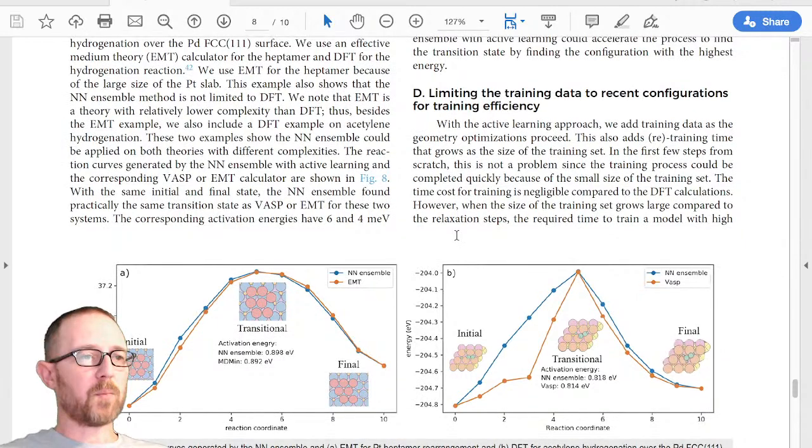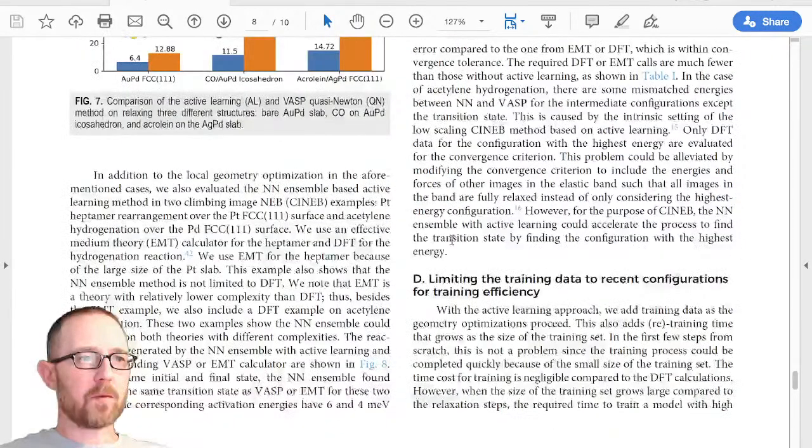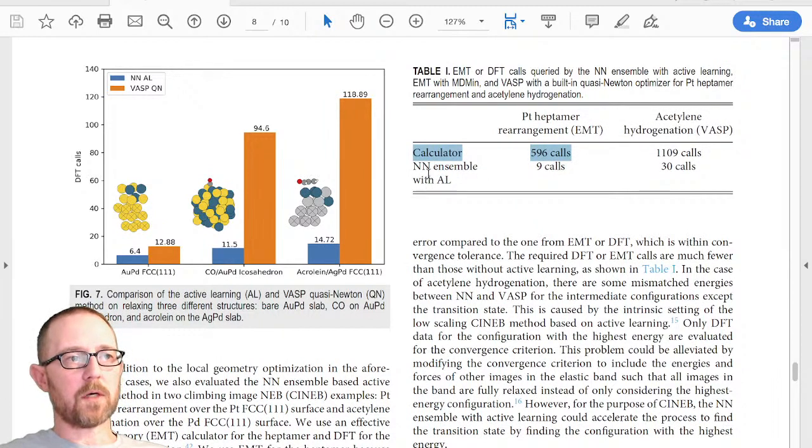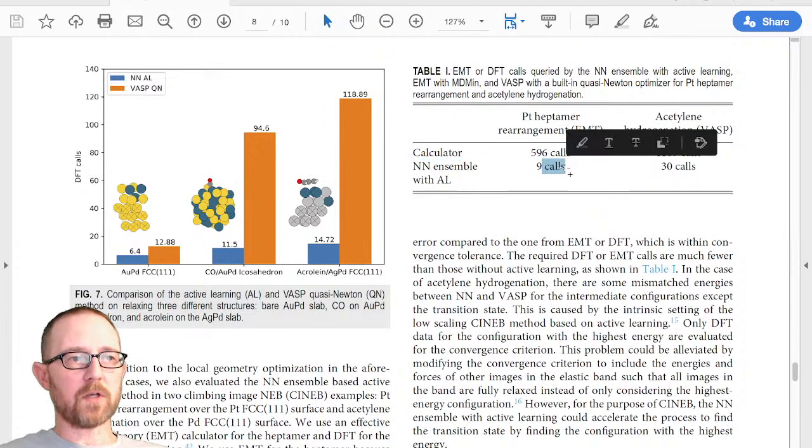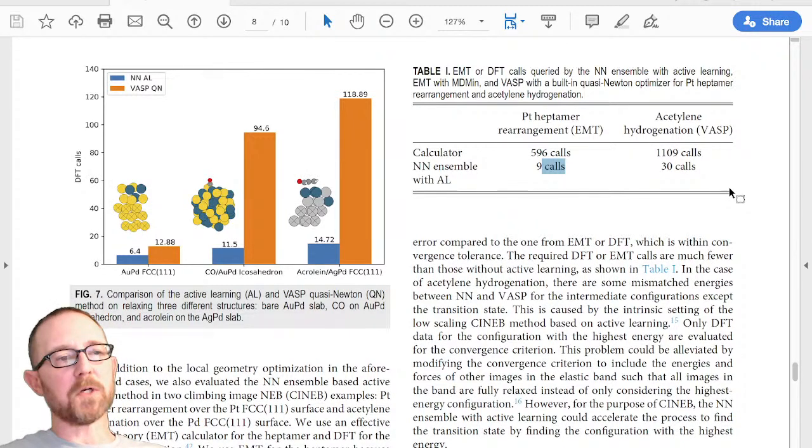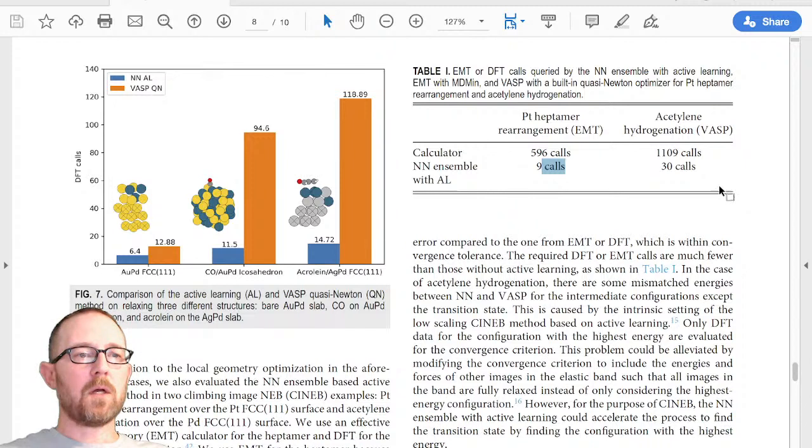And the best way to see the difference is up here. With the heptamer, we required 596 EMT calls. And with our active learning approach, we only required 9. And then for acetylene, it took 1100 calls to VASP. And with our ensemble approach, we could get the same barrier for practical purposes with only 30 calls.